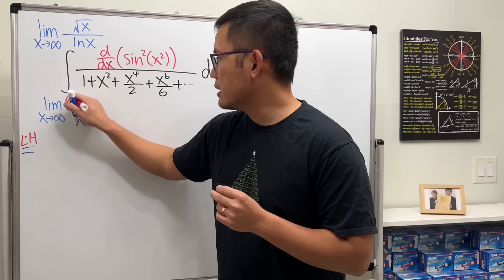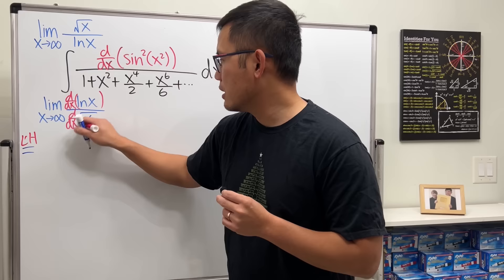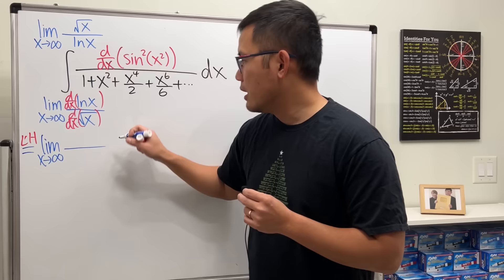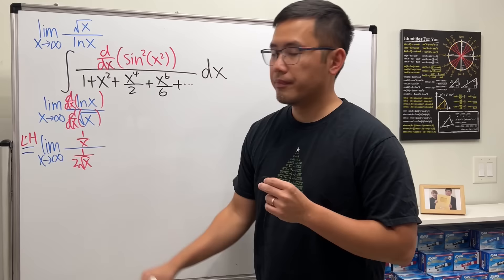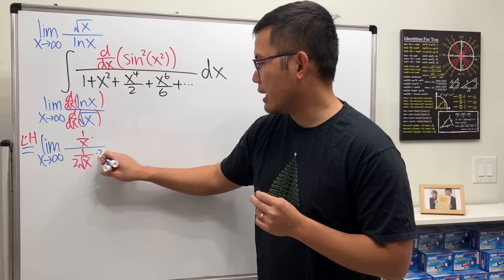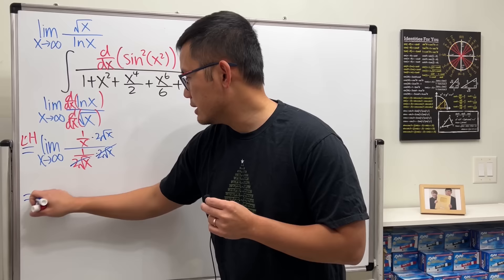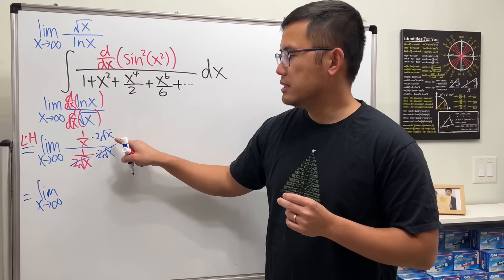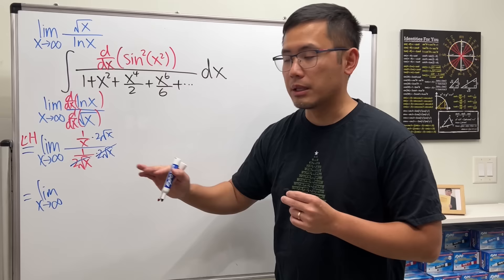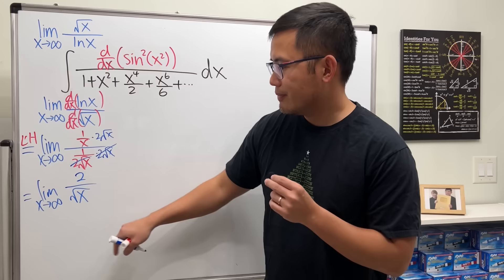Thanks to L'Hôpital, we can just take the derivative on the top and the derivative on the bottom. So this is the limit as x approaches infinity. On the top we get 1/x, on the bottom we have 1 over 2√x. Simplifying by multiplying top and bottom by 2√x, we get the limit as x approaches infinity of √x over x, which is x^(1/2) over x, giving us 2 over √x.